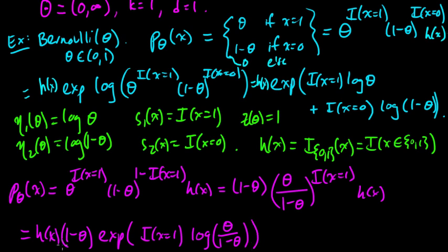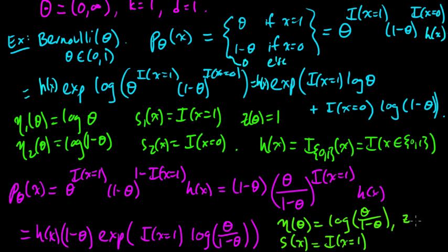And now, if we do the same trick, we do the x log type of trick, we get h of x, 1 minus theta. So let's go ahead and move the indicator down. X times the indicator that x equals 1 times log theta over 1 minus theta. And now, in this formulation, or at least in this way of writing it, we have η of theta here is just this thing. It's log theta over 1 minus theta.